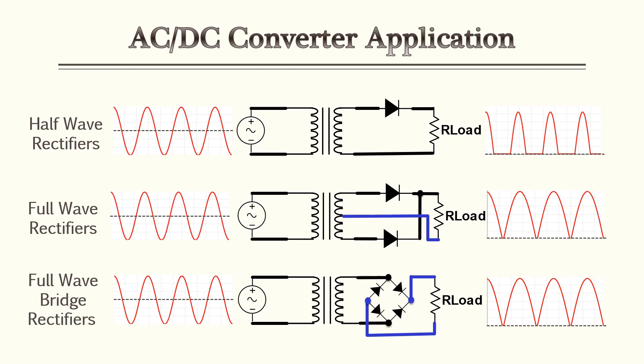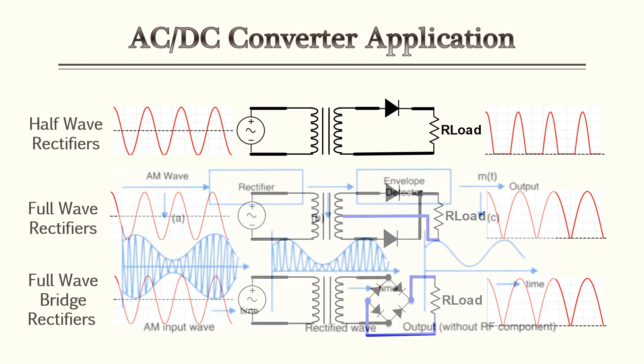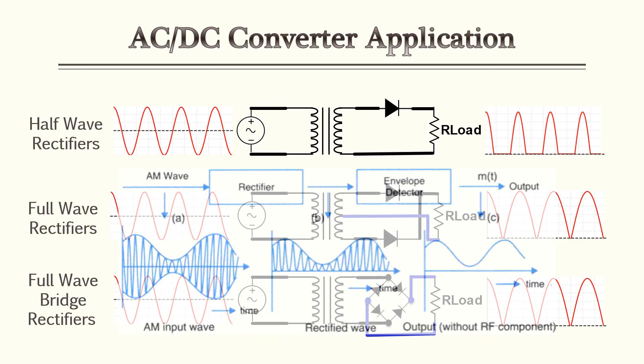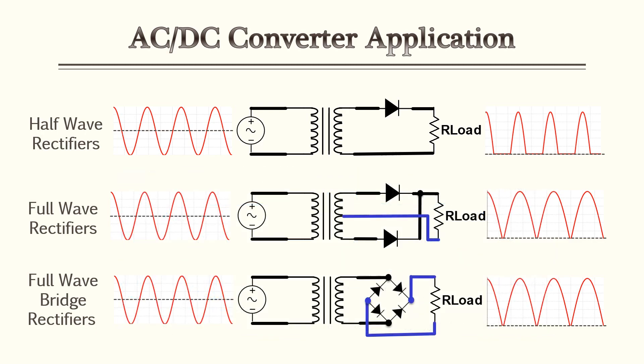A half-wave rectifier gives you half the sine wave, whereas the full-wave rectifiers take both the negative and positive portions of the sine wave and flip them onto the positive side on the oscilloscope. After this, a filter is applied and you'll start getting a DC signal. Also be aware that a half-wave rectifier can be used as an AM detector, which we'll cover in the amplitude modulation and communications lesson.